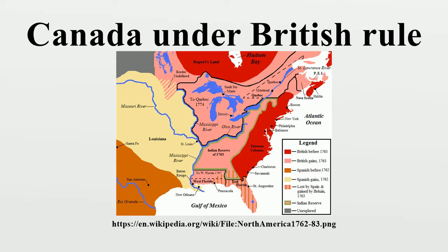In 1775, American revolutionaries attempted to push their insurrection into Quebec. Support for the Patriot cause was mixed. The clergy and landowners were generally opposed to it, while English-speaking merchants and migrants from the 13 colonies were generally supportive of it. The inhabitants were divided. In some areas there was significant support, and militia companies were raised in support of the Patriots by James Livingston. The Patriots laid siege to Fort St. John, capturing it and Montreal in November 1775.